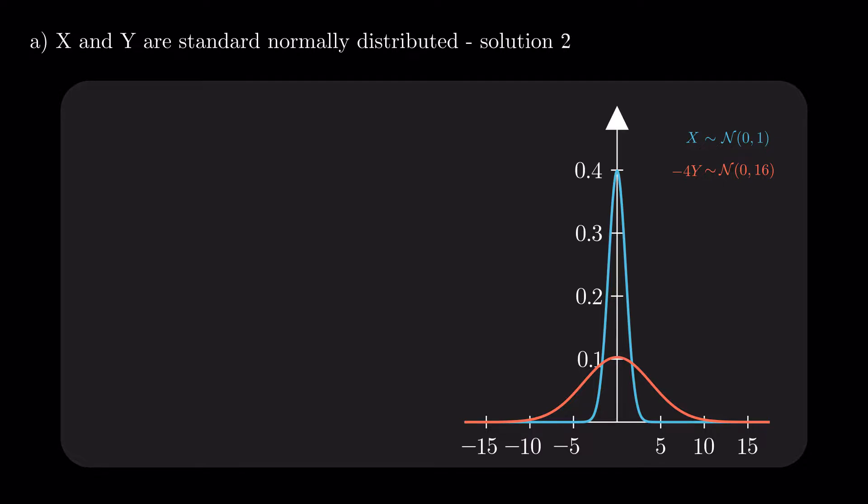Now for another solution. With a pair of random variables X and -4Y, and Y for that matter, centered around 0, we can split both at the 0 boundary, marking 4 quadrants.